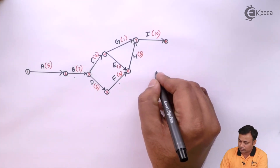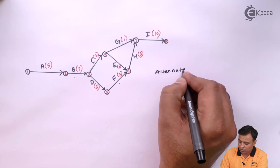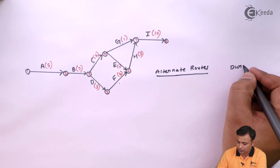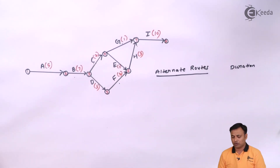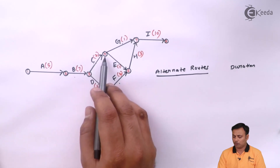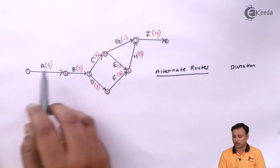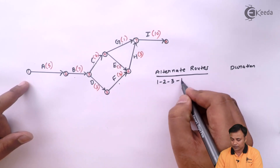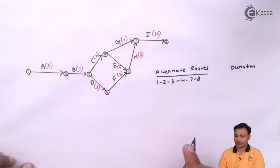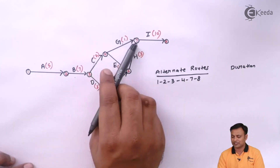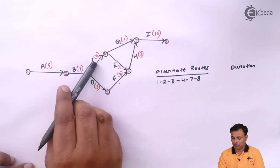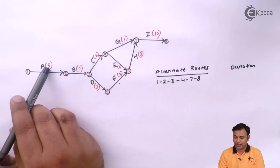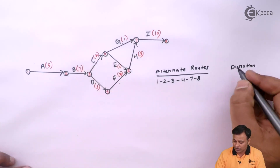Listing alternate routes from node 1 to node 8. My first route is 1→2→3→4→7→8, with durations 5+7+2+1+10 = 25. The second route is 1→2→3→4→6→7→8, with durations 5+7+2+3+3+10 = 28.